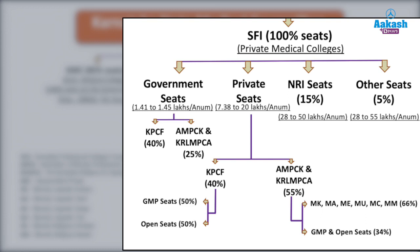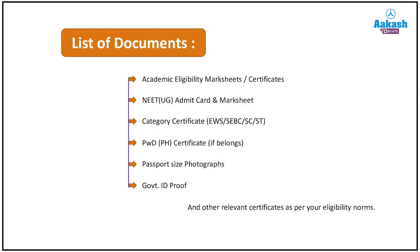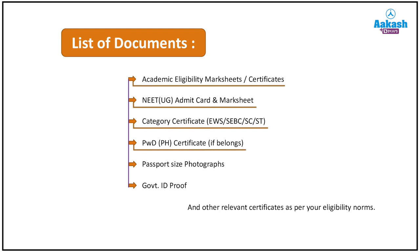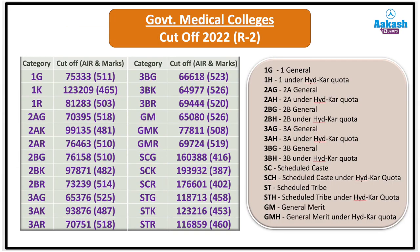As per your eligibility, you can proceed with the counseling process. At the time of admission, important documents required include: academic eligibility mark sheet or certificate, NEET UG admit card and mark sheet, category-wise certificates (EWS, SEBC, SC/ST, PWT as applicable), passport size photograph, government ID proof, and other relevant certificates as per eligibility norms. Full details are available on the official website.